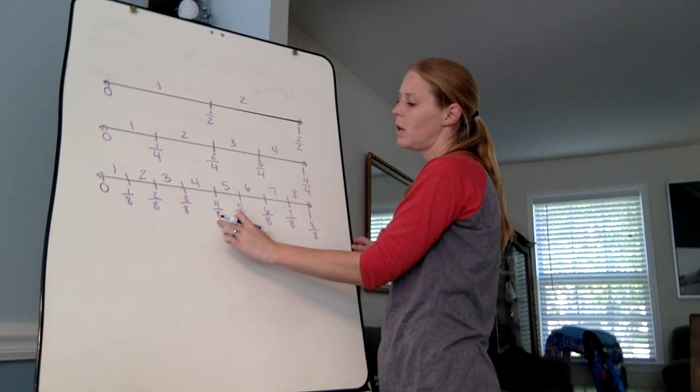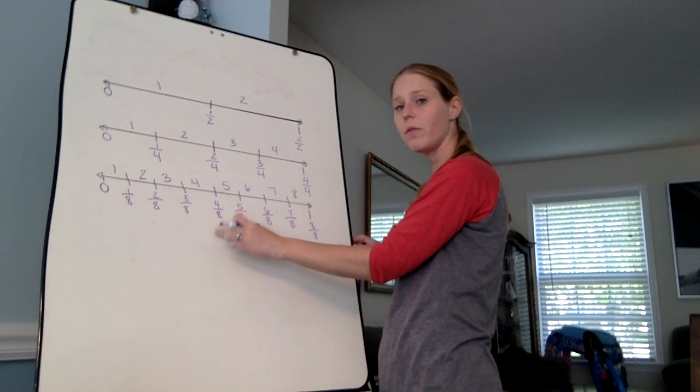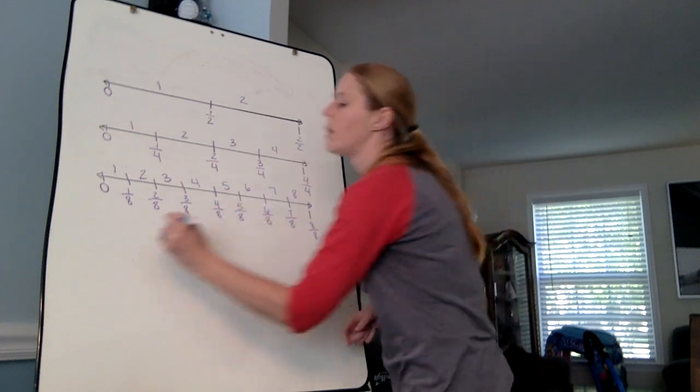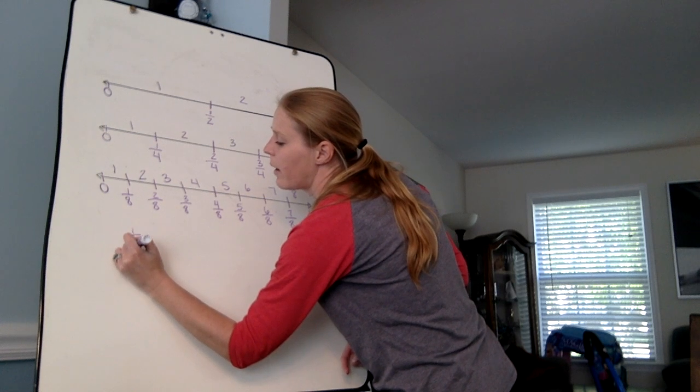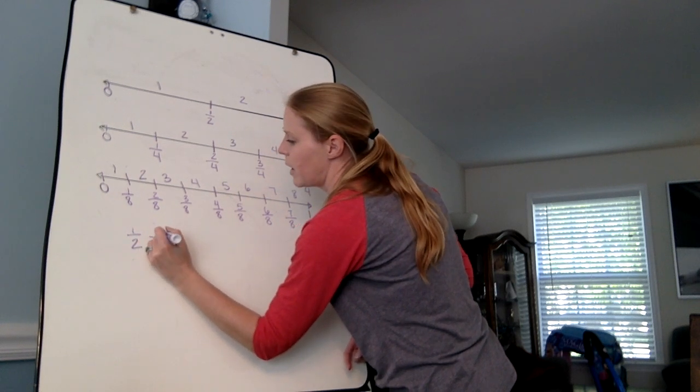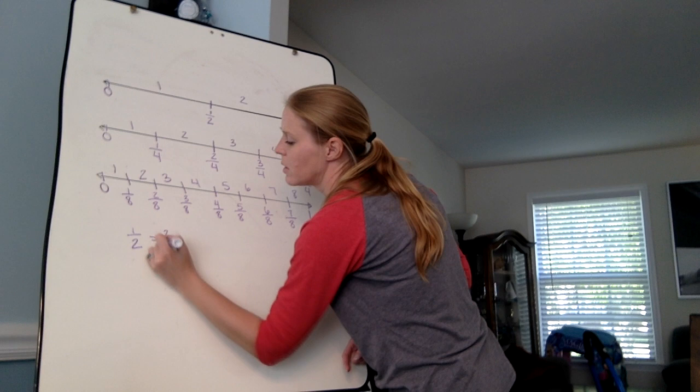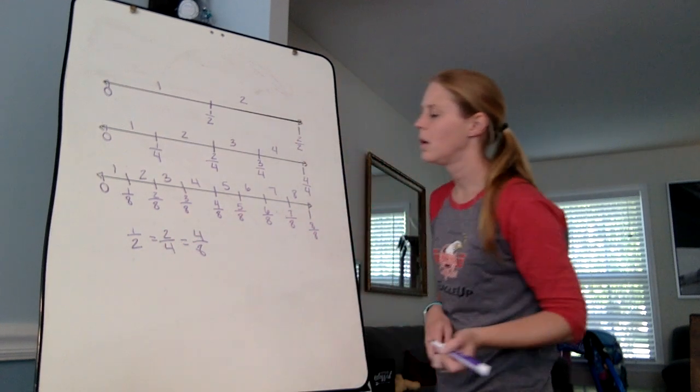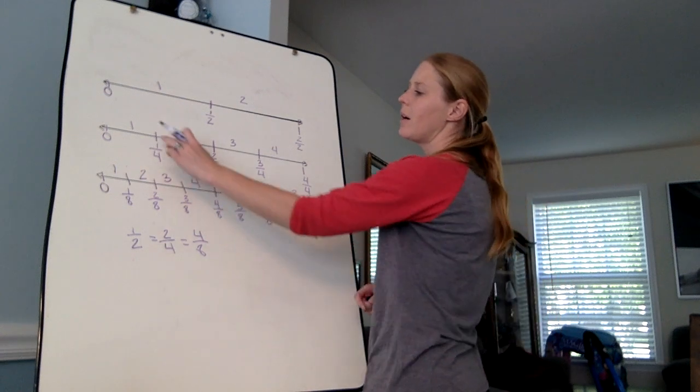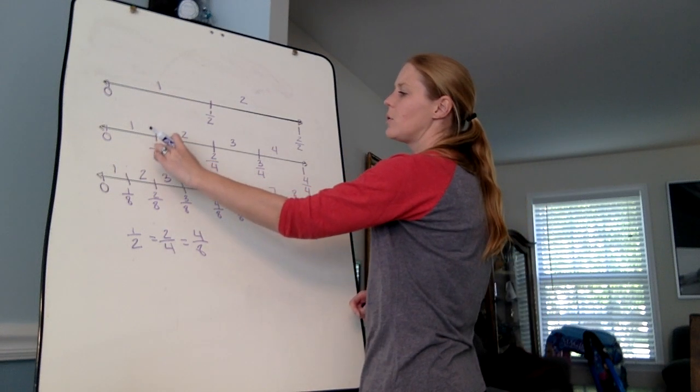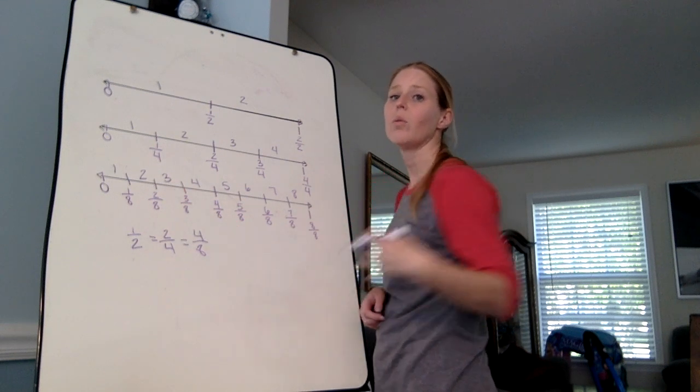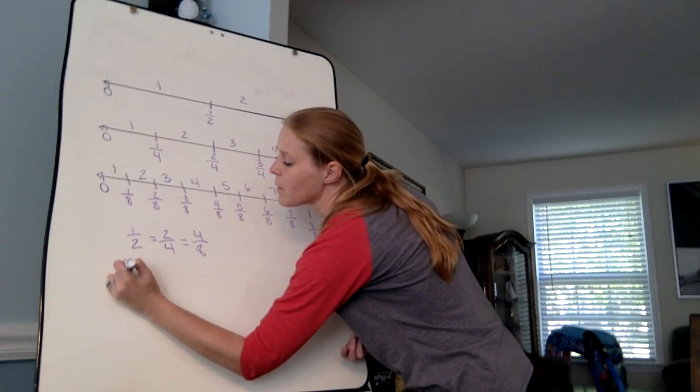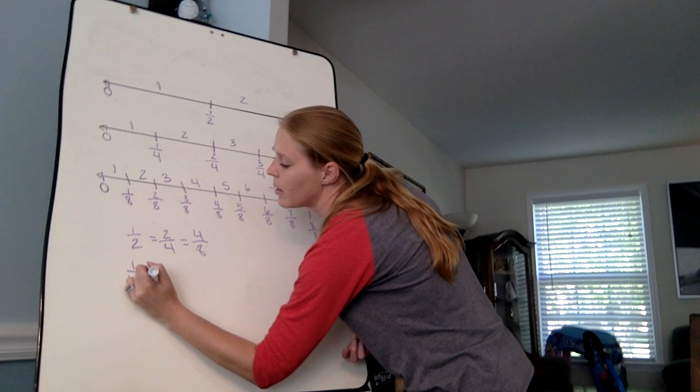One half, two fourths, and four eighths are all equivalent fractions because they all take up the same amount of space on our number line. So one half is the same as two fourths, which equals four eighths. I can also look here at one fourth. If I go straight down from one fourth, I run into two eighths. One fourth and two eighths are also equivalent fractions.